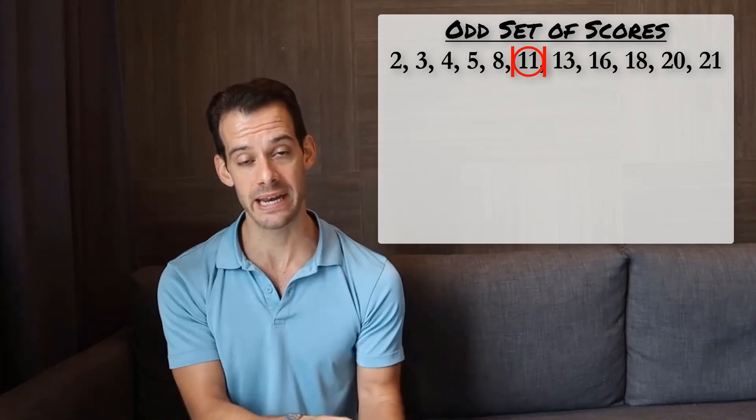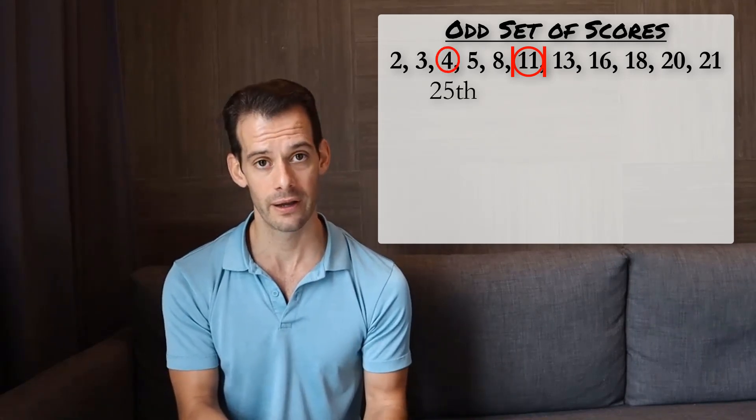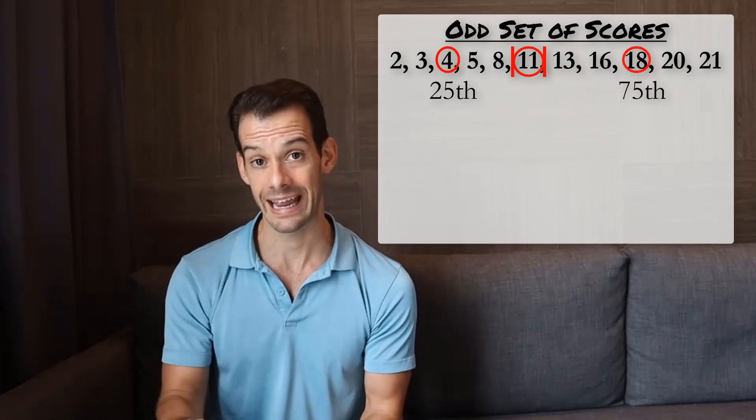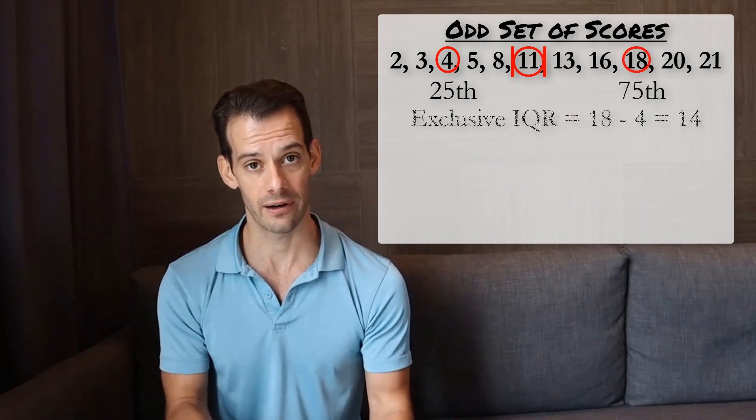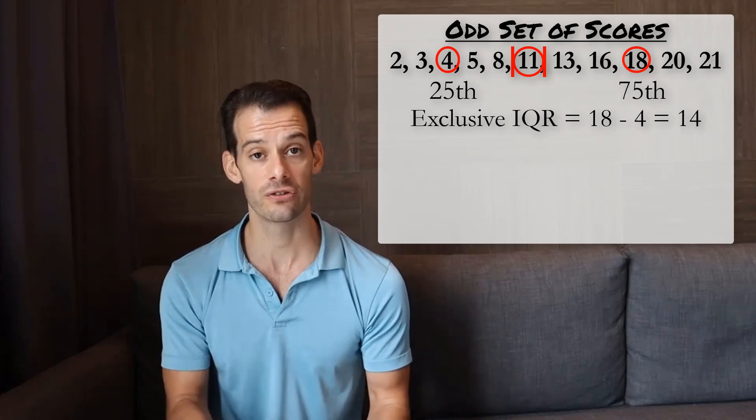So now we find the medians of those two halves and we get a 25th percentile of 4 and a 75th percentile of 18. So to find our exclusive interquartile range, we take 18 minus 4 equals 14.